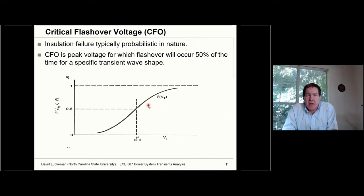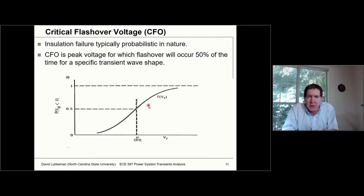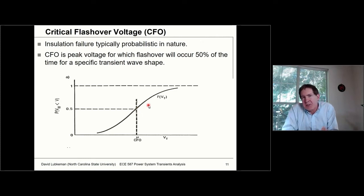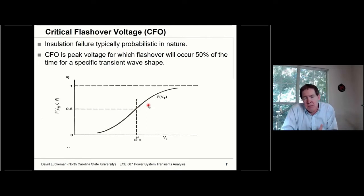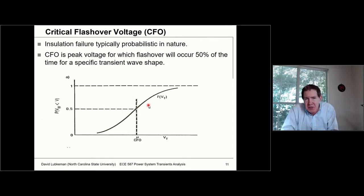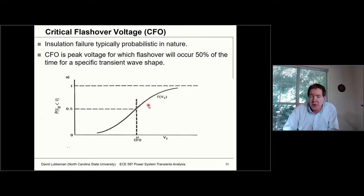Whether a flashover occurs or not is defined by the critical flashover voltage. If you're testing a circuit breaker withstand to surges in a high-voltage lab, hitting it with 100 kV pulses, a certain number of times it fails and a certain number of times it doesn't — depending on conditions like the number of free electrons around the insulating devices. Critical flashover voltage is the peak voltage at which flashover occurs 50% of the time. If you run a series of tests with the same waveform and find the 50% point, that's your critical flashover voltage.